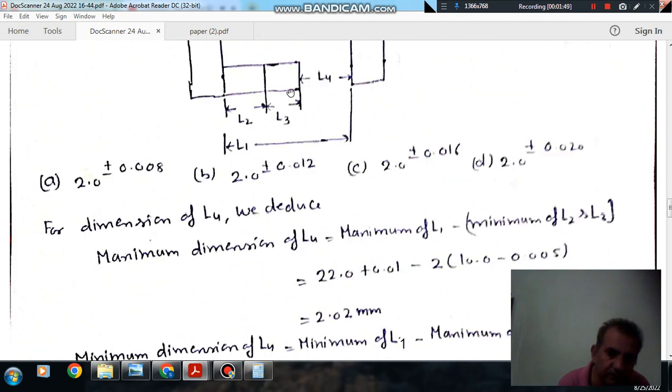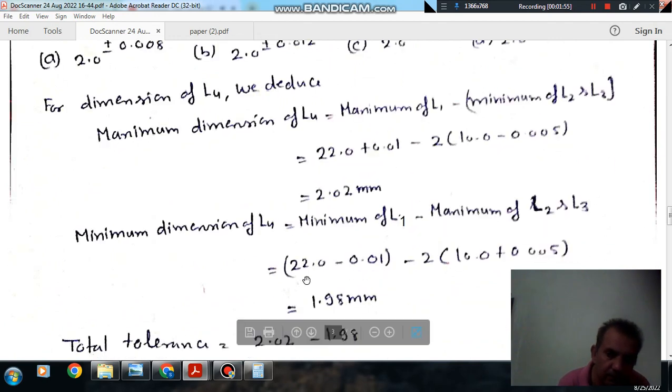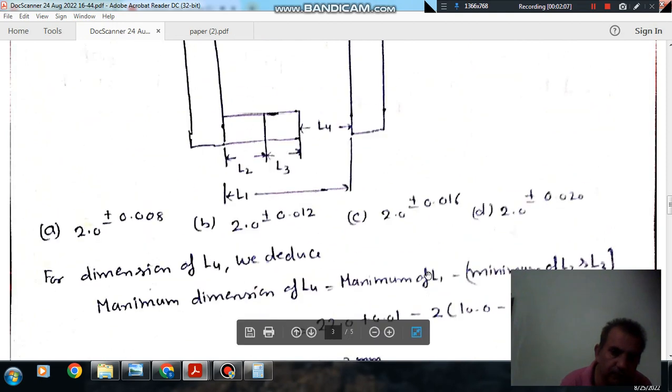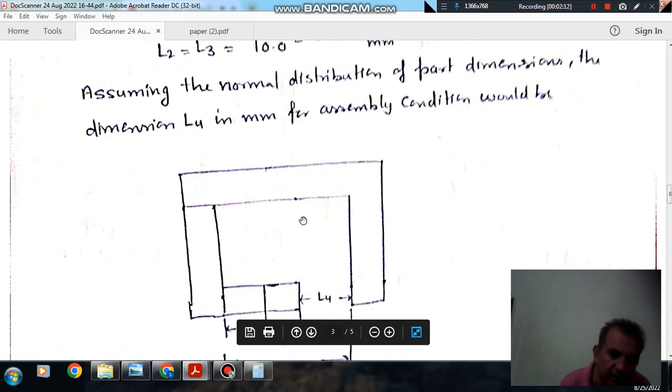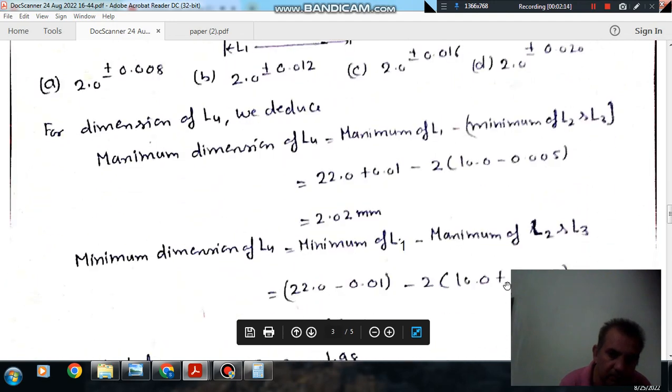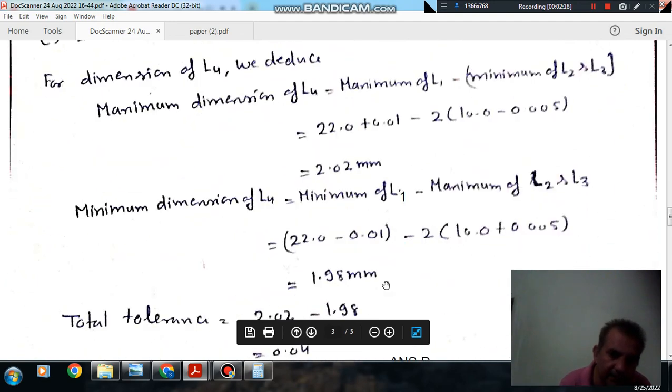Similarly, the minimum dimension of L4 is taking minimum dimension of L1 and maximum dimension of L2 and L3. So minimum dimension of L1 is 22.0 minus 0.01, and maximum dimension of L2 and L3 is 10.0 plus 0.005 into 2. So it is 1.98 mm.